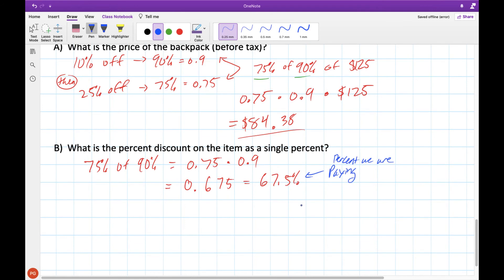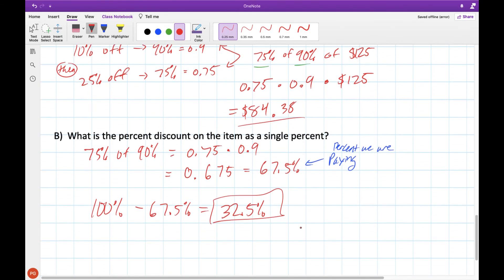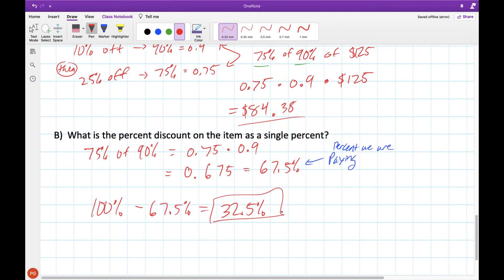So now we need to go in reverse. If we're paying 67.5% of the original price, what's that discount? That's the same as saying, all right, we started at 100%. Now we're down to 67.5%. What's this difference? If we punch that into our calculator, we'll get 32.5%. So 10% then another 25% is the same as 32.5% discount if we combine those two percentages together.